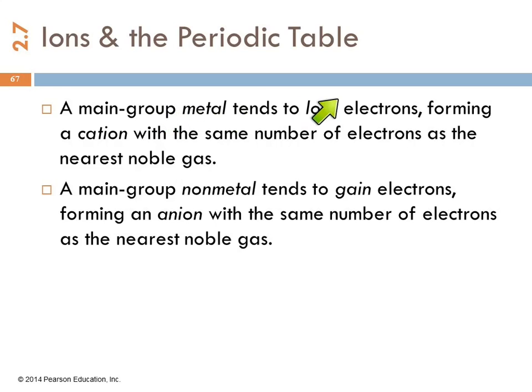A main group metal tends to lose electrons. It's going to form a cation with the same number of electrons as the nearest noble gas. And a main group non-metal is going to form an anion with the same number of electrons as the nearest noble gas.